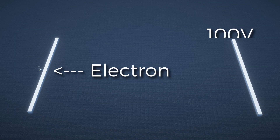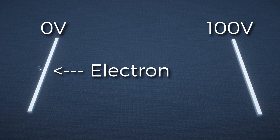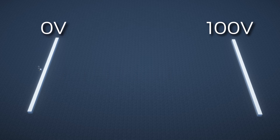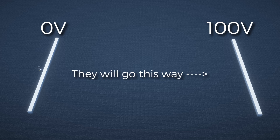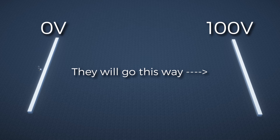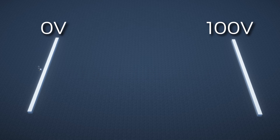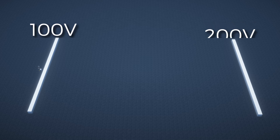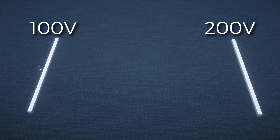Say that I'm an electron being accelerated through a potential difference of 100 volts. Now the important thing to note is potential difference applies to positive charges, and since electrons are negative charge, they'll actually go from lower voltage to higher voltage. So a potential difference could look like 0 volts on the starting side to 100 volts on the other side — that's the direction the electron will be going — or 100 volts on the starting side and 200 volts on the ending side. These are all the same just as long as the difference is the same.